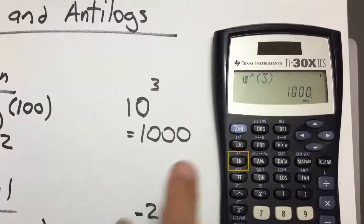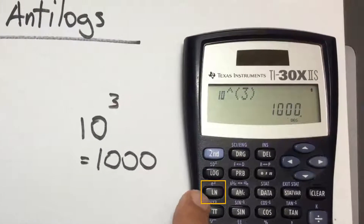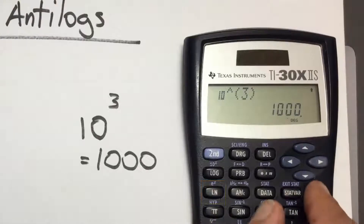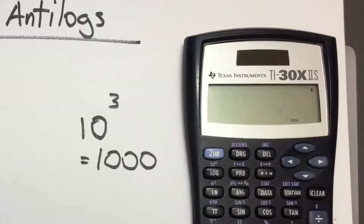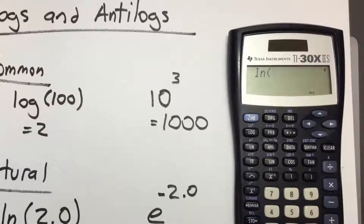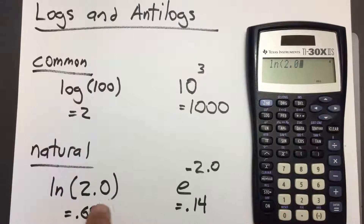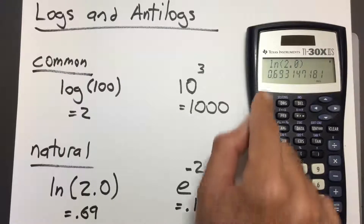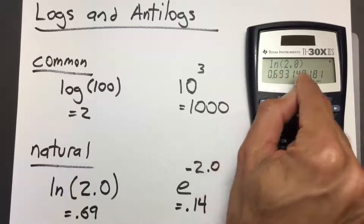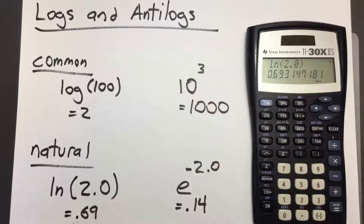To take the natural log, we use the button right below common log. Clear our screen and press the LN key. Inside the parentheses we enter 2.0, close the parentheses, and press enter. This gives us 0.69314 — we'll just say 0.69, which is close enough for our purposes.